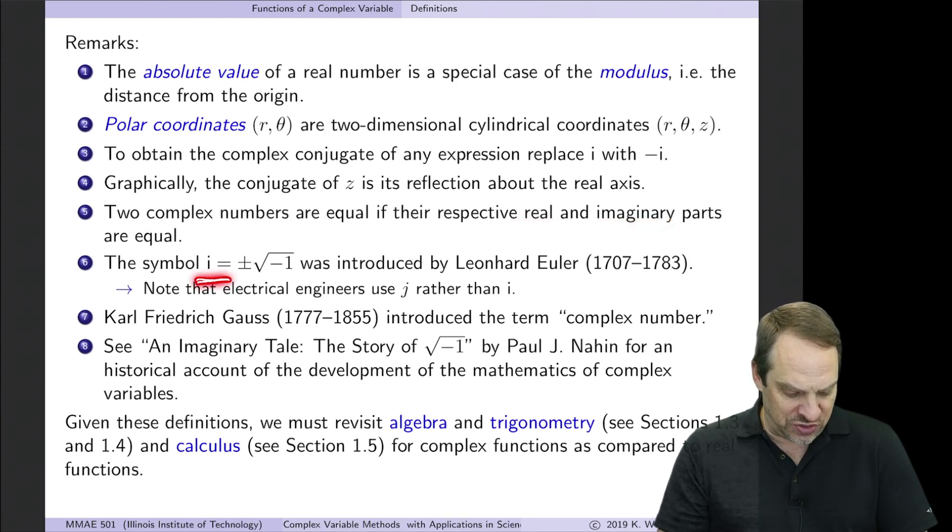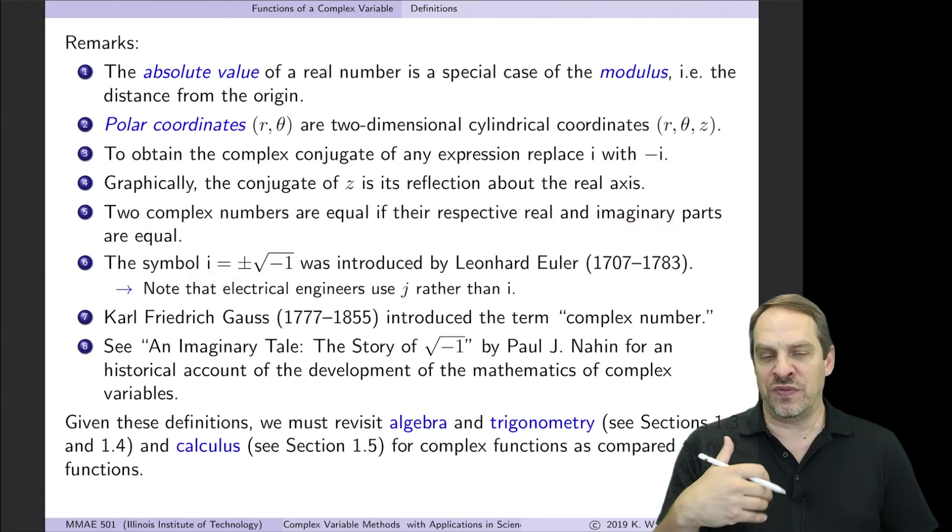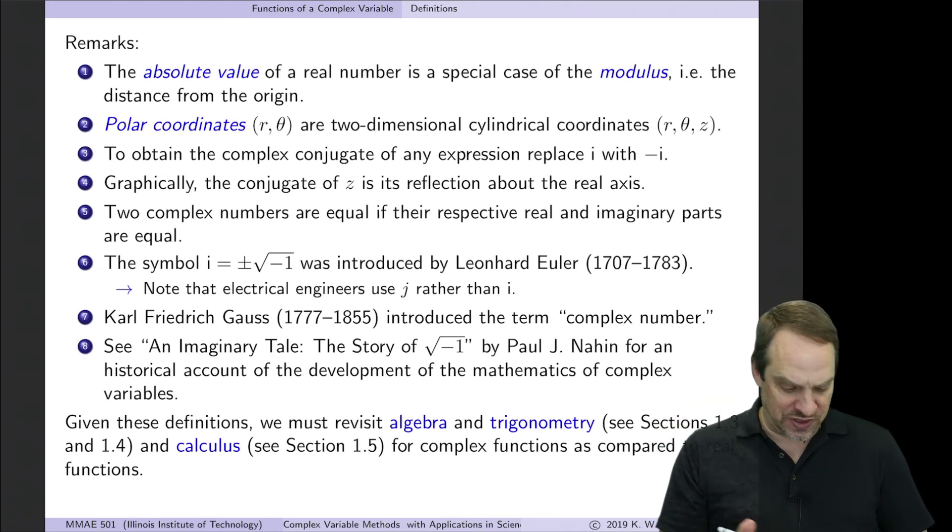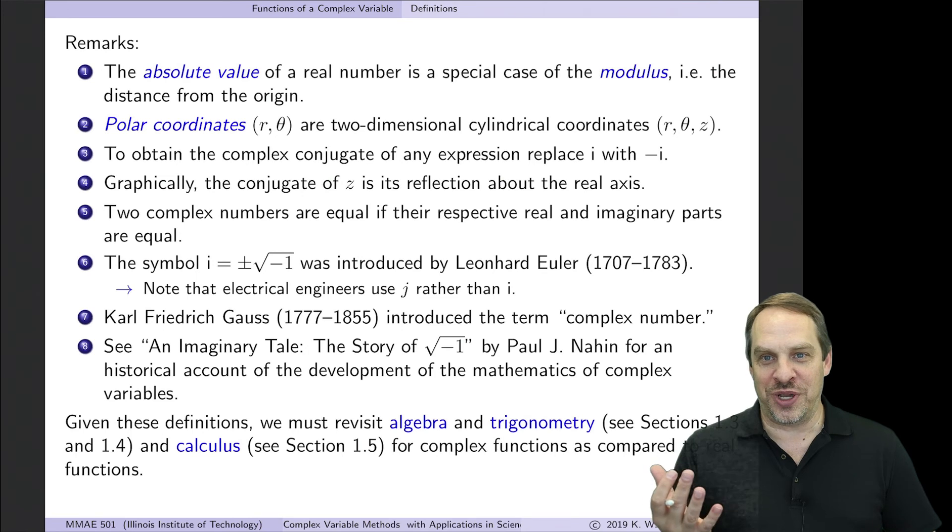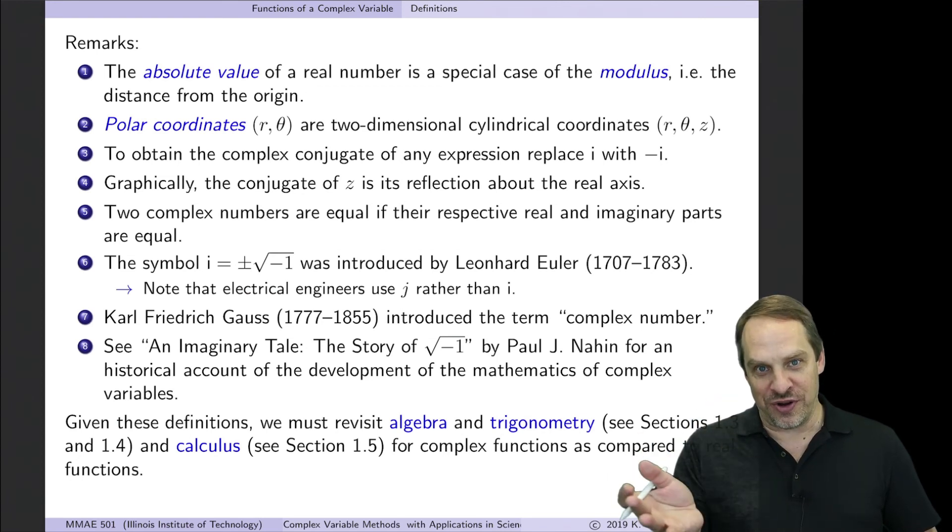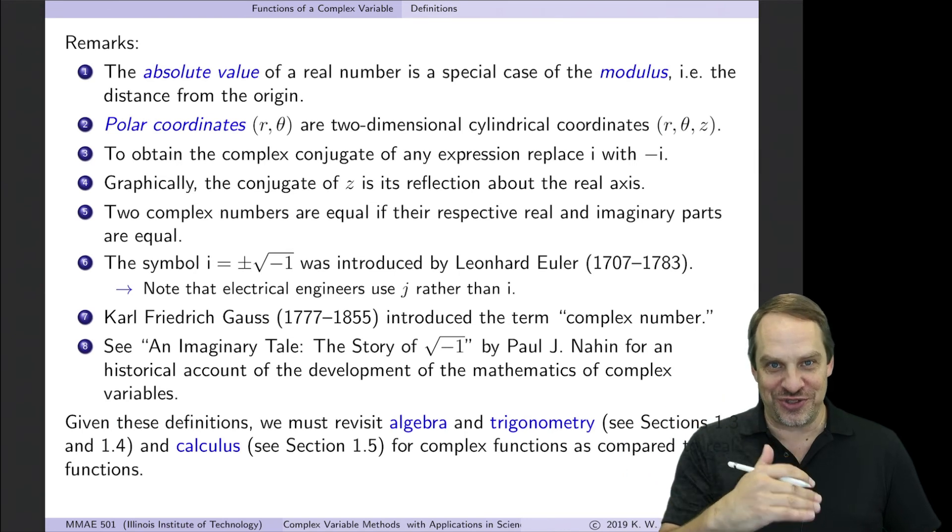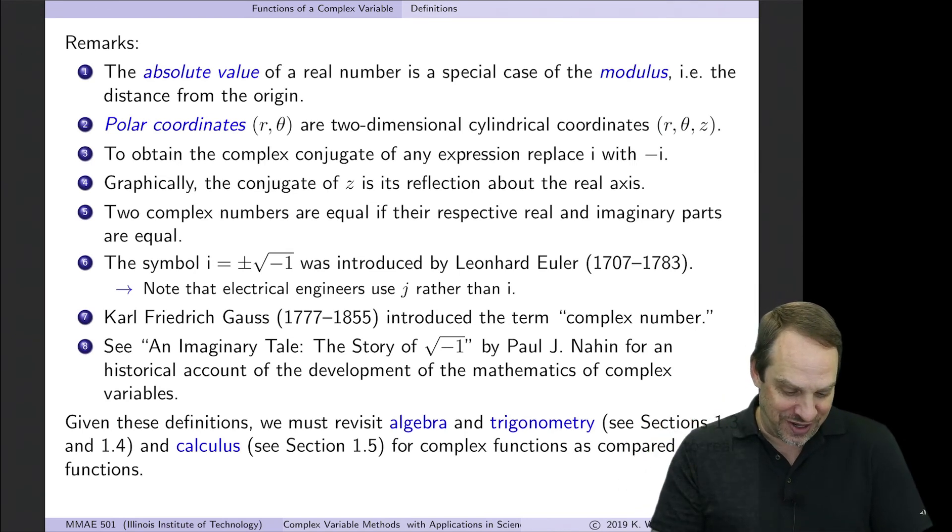Now, the symbol that we use, we often don't think about who thought of these, who came up with these, who standardized these. It was actually Leonard Euler who was the one who standardized this notation, I. Now, for you electrical engineers, you're thinking, wait, what's this I? We use J. I hate to break it to you, but the rest of the world uses I for the imaginary number. You use J because I is the current, and so that's already used, so you had to use J. But the rest of us, we all use I. It was actually Gauss who came up with the term complex number.